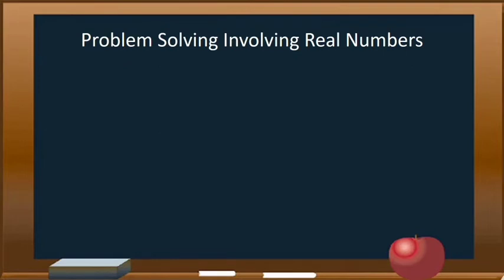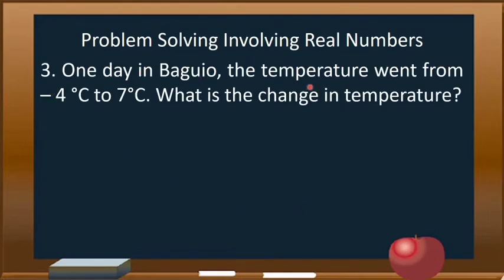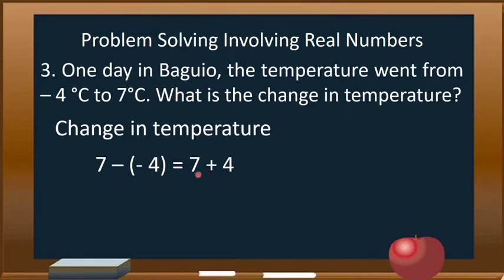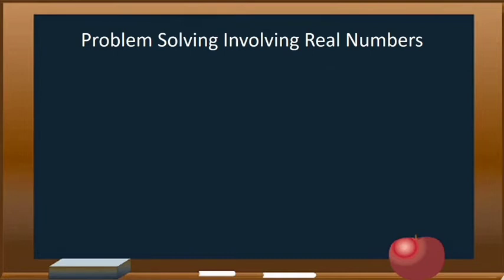Now let us have example number 3. One day in Baguio, the temperature went from negative 4 degrees Celsius to 7 degrees Celsius. What is the change in temperature? We subtract the first temperature from the second: 7 minus negative 4. By the rule of subtraction, we keep the minuend, change the operation symbol to plus, and get the opposite of negative 4, which is positive 4. So 7 plus 4 equals 11. The change in temperature is 11 degrees Celsius.